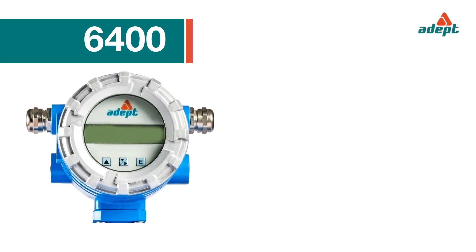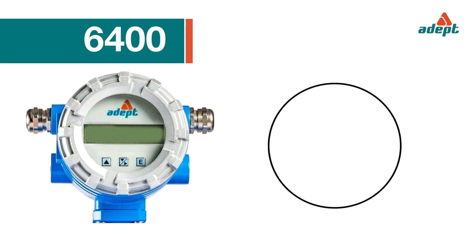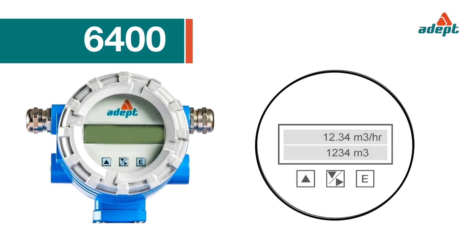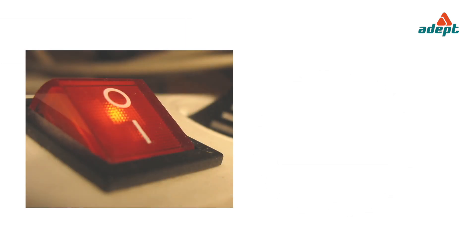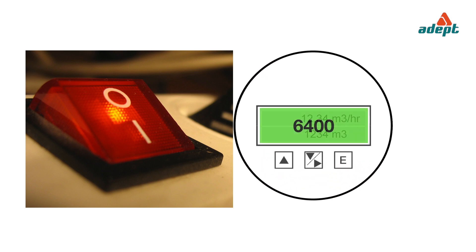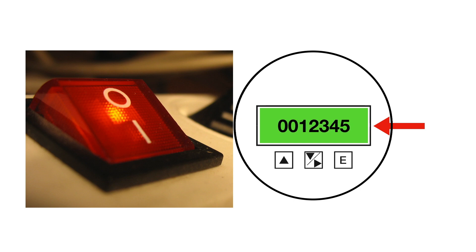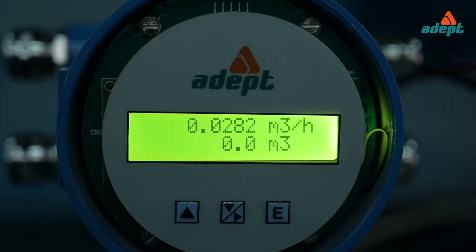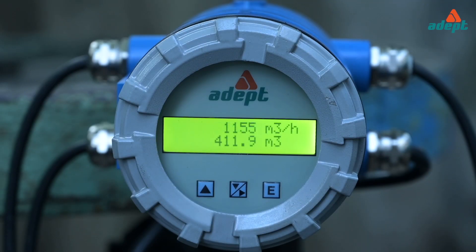The 6400 menu has the following structure. At power on, the transmitter LCD momentarily indicates the flow meter model, then the software version number, then the run mode indicating the flow rate, totalized flow, and flow velocity depending on the parameters that have been configured.